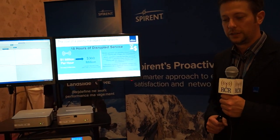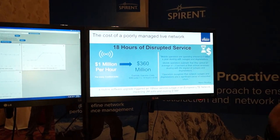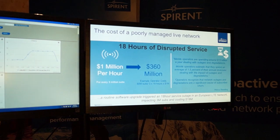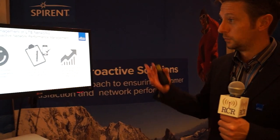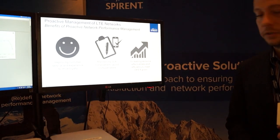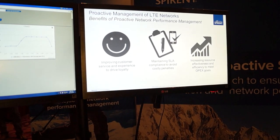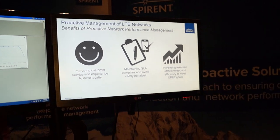The problem that we're trying to address with Spirant Landslide Edge and Core is really providing more visibility and proactive visibility into network issues, and understanding what's going on when a network outage occurs. We want to do this to improve customer service, maintain service level agreements, and ultimately it all comes down to what we all care about — increasing revenue.